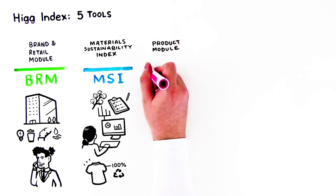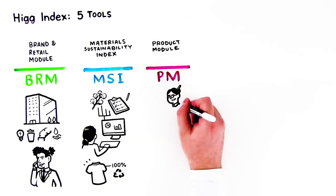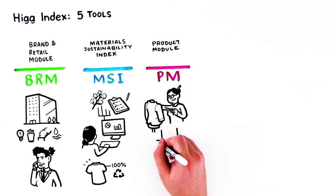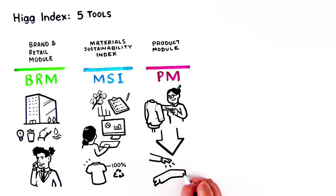The HIG Product Module, or PM, measures the overall environmental impacts of a product from the time it's designed through to the end of its life.